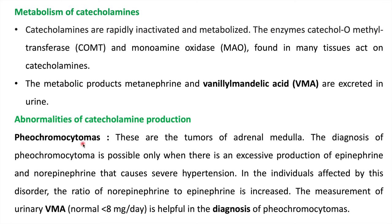Regarding abnormalities of catecholamine production, there is pheochromocytoma, which is a tumor of the adrenal medulla caused by excessive production of epinephrine and norepinephrine, leading to severe hypertension. The ratio of norepinephrine to epinephrine is increased in affected individuals. VMA (vanillylmandelic acid) levels in urine can be measured to assess catecholamine content; the normal value is less than 8 mg per day, and elevated VMA in urine indicates pheochromocytoma.